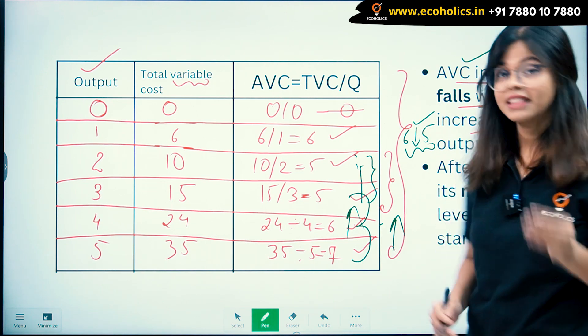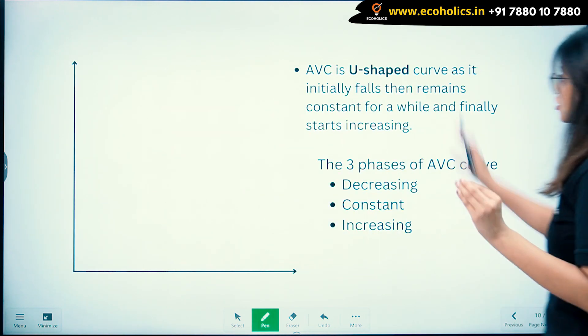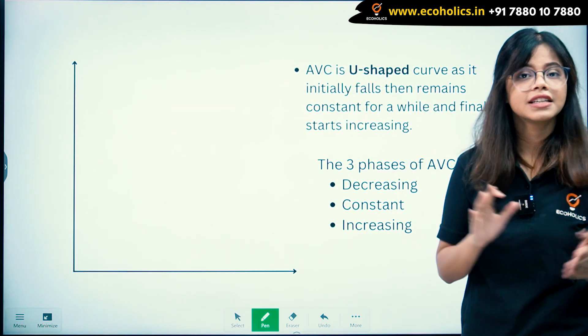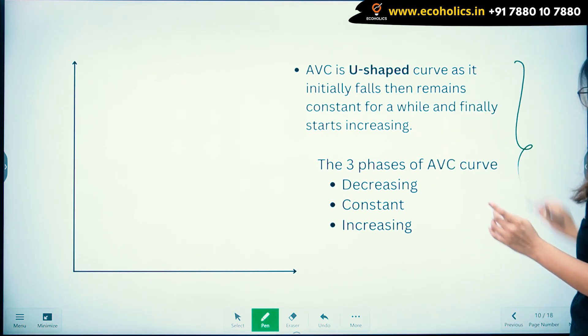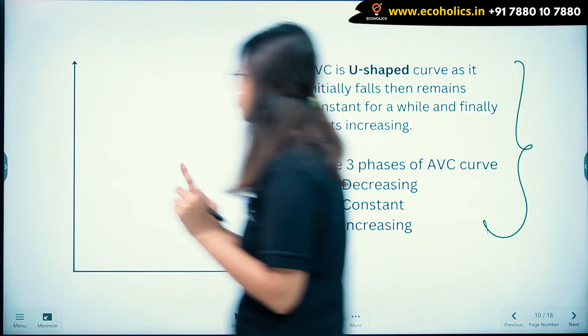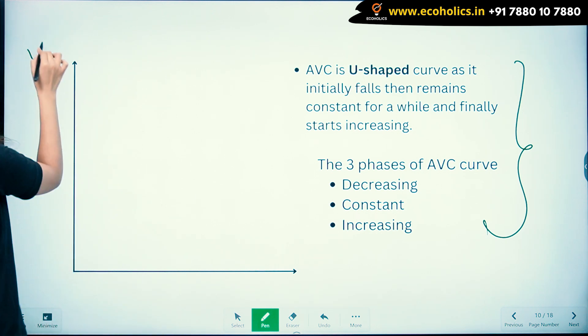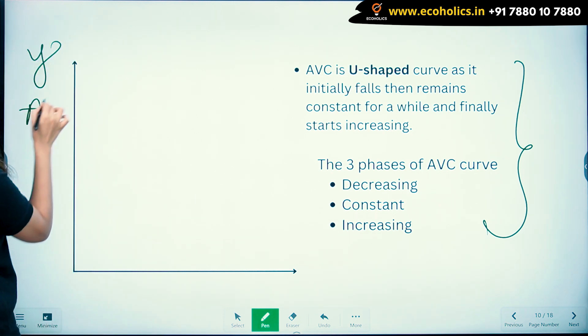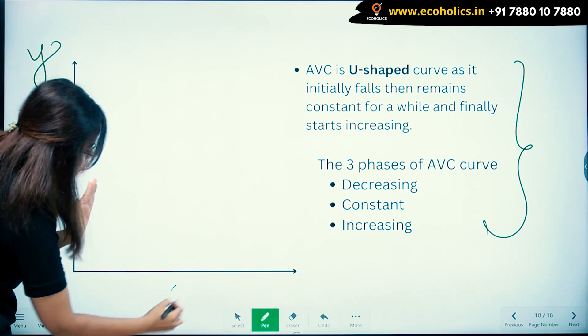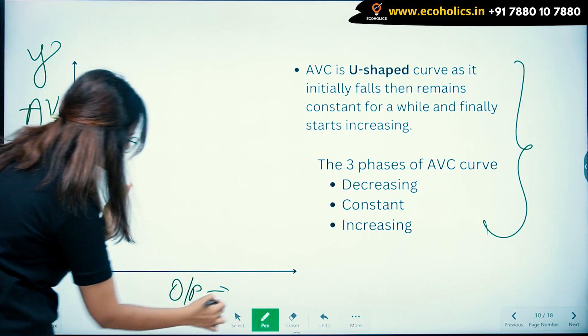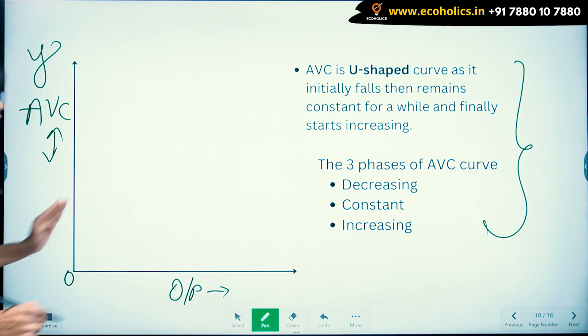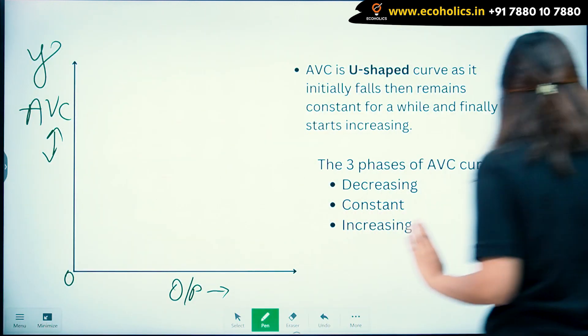So let's understand the AVC now. We'll draw the AVC curve first. What do we take on the Y-axis? On the Y-axis we take AVC, and on the X-axis we take output. This is your origin point. Now, what have we calculated?